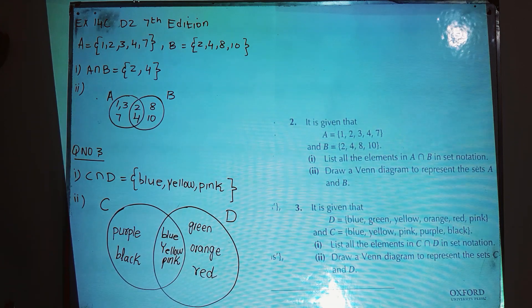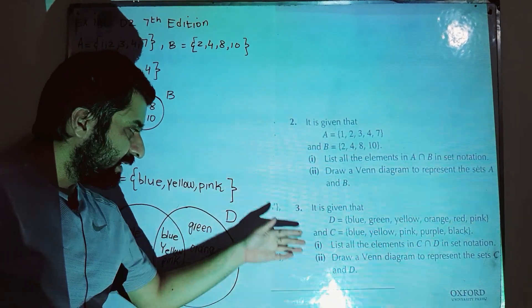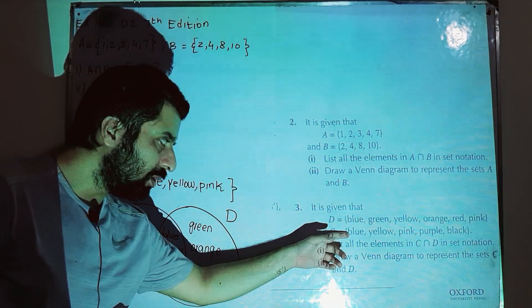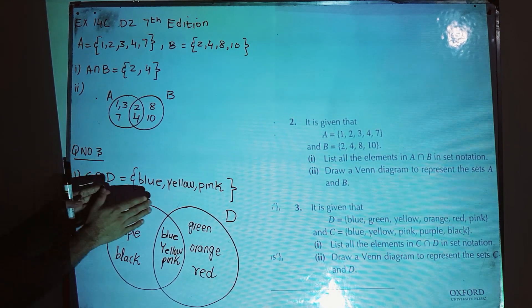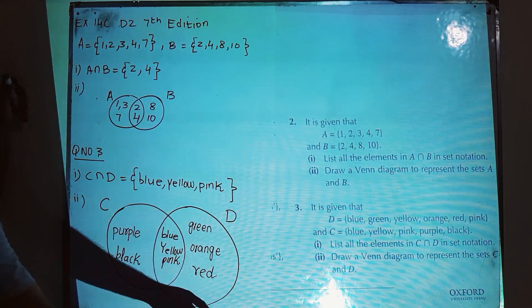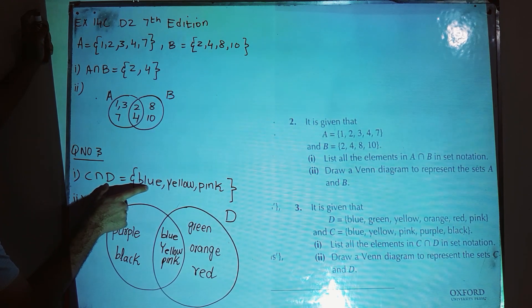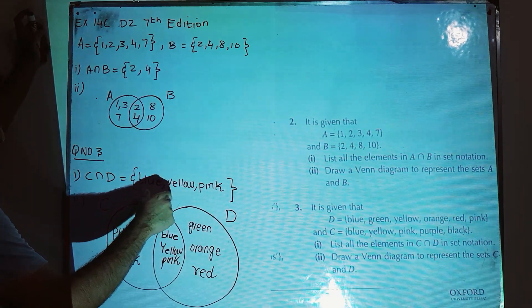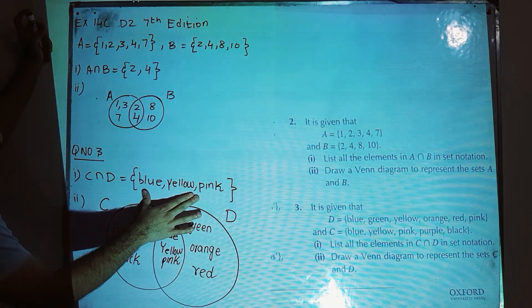Question number three: we have set D = {blue, green, yellow, orange, red, pink} and set C = {blue, yellow, pink, purple, black}. Part one is to list all elements in C intersection D in set notation — those colors which are present in both sets. Blue is present in both C and D, yellow is present in both, and pink is present in both C and D, so the intersection is {blue, yellow, pink}.